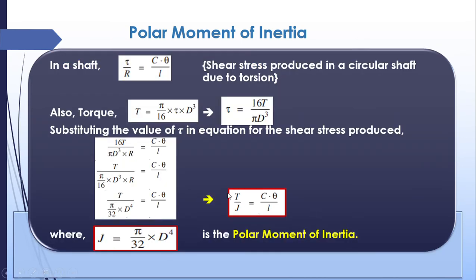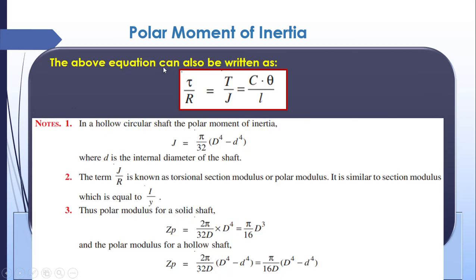Combining tau / R = C·theta / L and T / J = C·theta / L gives the complete torsional equation: tau / R = T / J = C·theta / L. This is analogous to the bending moment equation M / I = sigma / y = E / R. In torsion, tau replaces sigma (shear stress instead of bending stress), R replaces y (radius instead of distance to neutral axis), T replaces M (torque instead of bending moment), and J replaces I (polar moment instead of second moment of area).